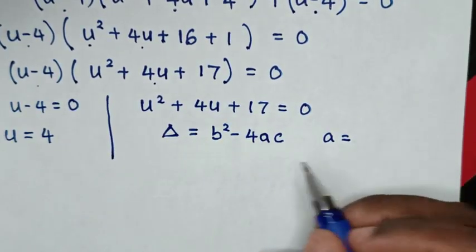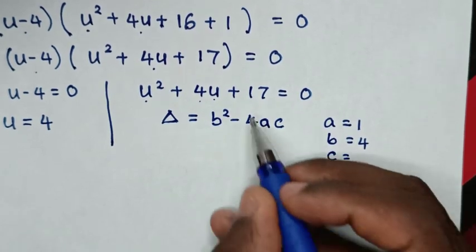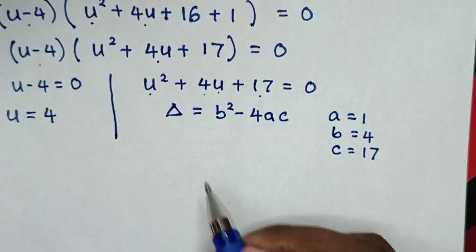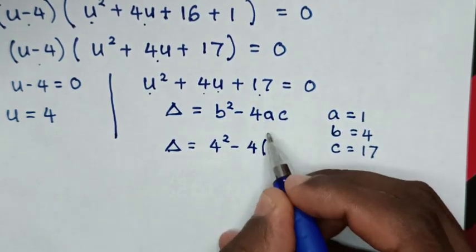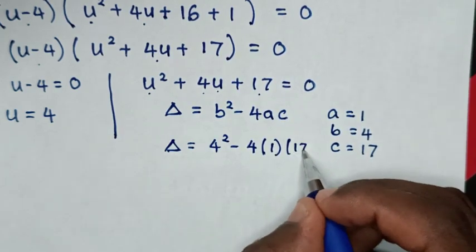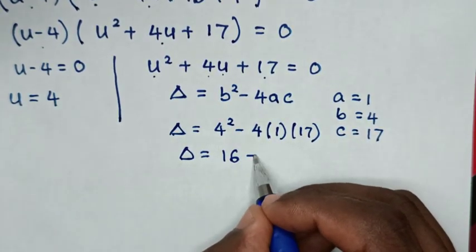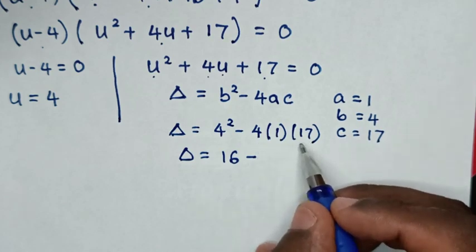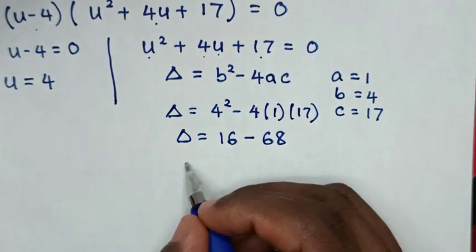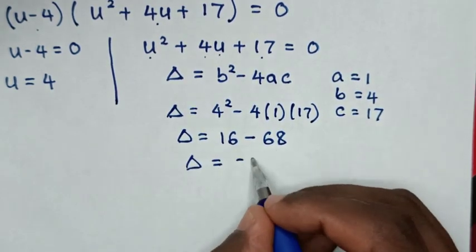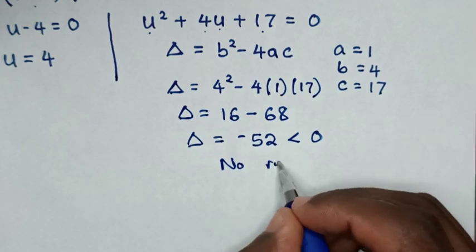From this quadratic equation, a is equal to the coefficient of u squared which is 1, b is equal to the coefficient of u which is 4, and c is equal to the constant which is 17. Then from the discriminant formula: discriminant equals b squared which is 4 squared, minus 4 times a which is 1, times c which is 17. That gives discriminant equals 16 minus 68 which is negative 52. Because this is less than 0, there is no real solution from here.